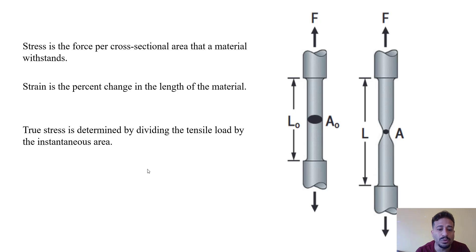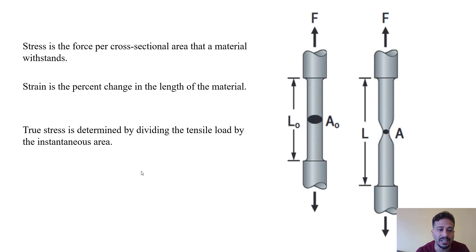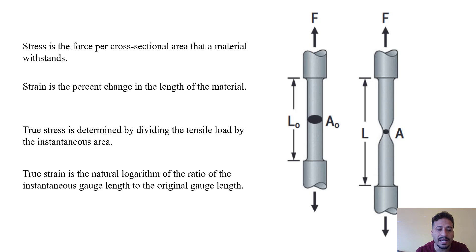If we want to calculate the true stress-strain curve, we should consider the change in area of the sample during the test. True stress is determined by dividing the applied load by the instantaneous area. The true strain is the natural logarithm of the ratio of the instantaneous gauge length to the original gauge length.